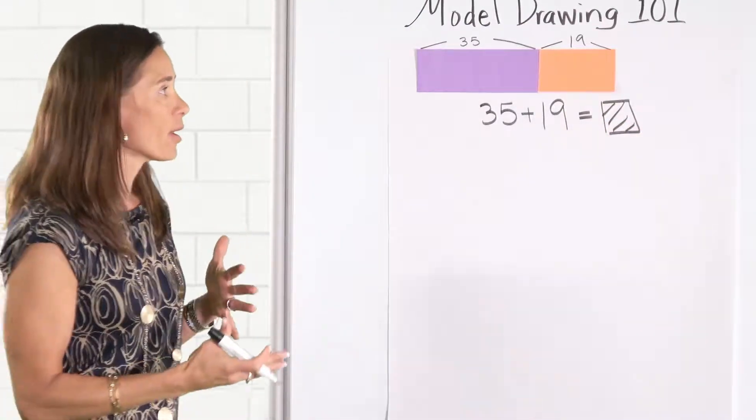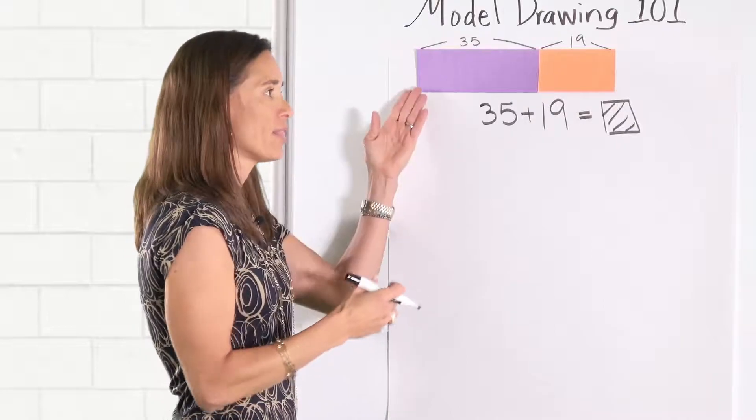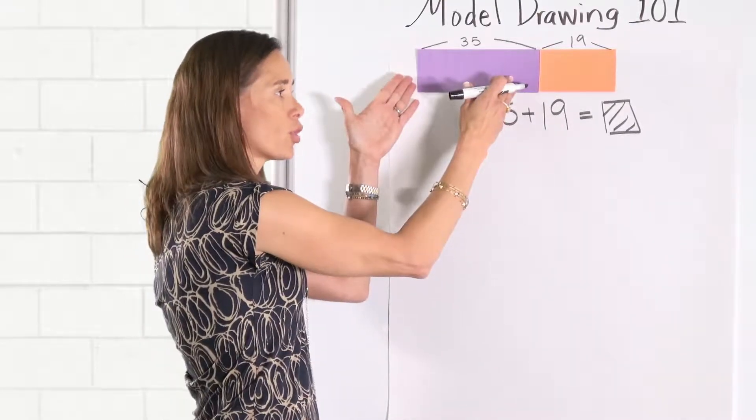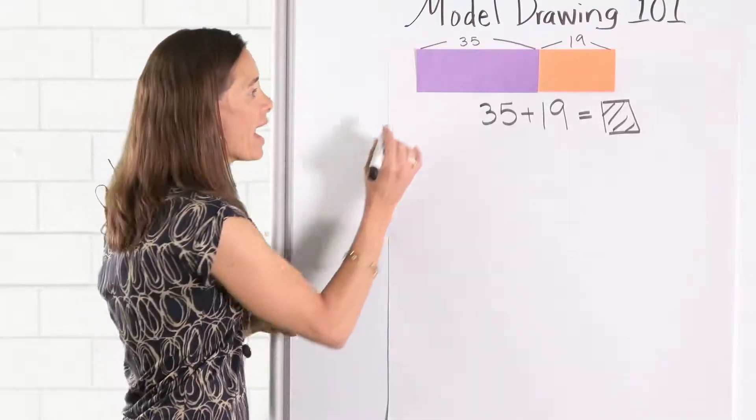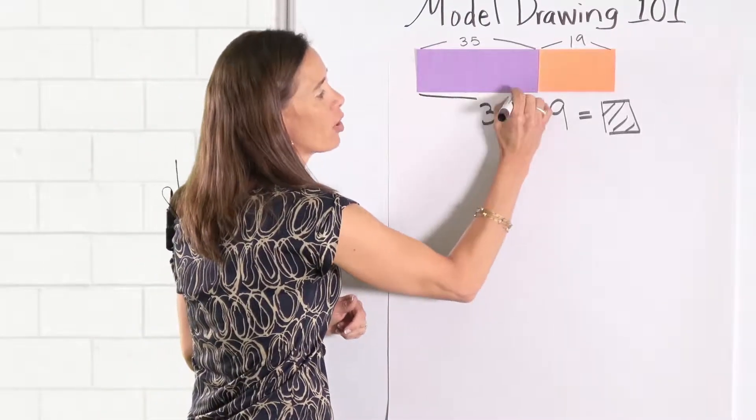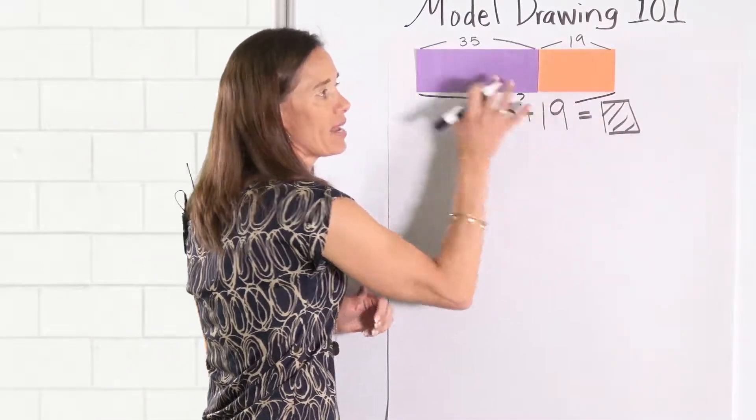So using the bar model they can see and comprehend the action of the coins that we started with, the coins that were given. And then how many coins do they have all together would represent the whole.